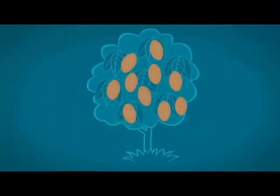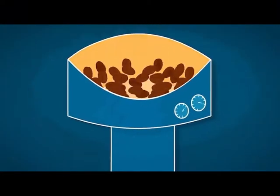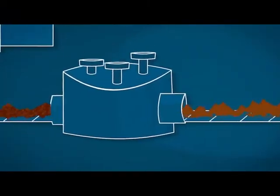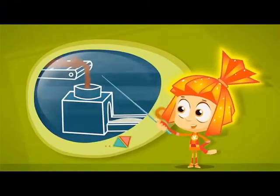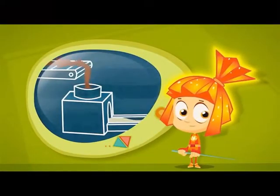The key ingredient in chocolate is cocoa beans. They are roasted, crushed, and ground. After that, the ground beans are pressed to extract the oil from them.